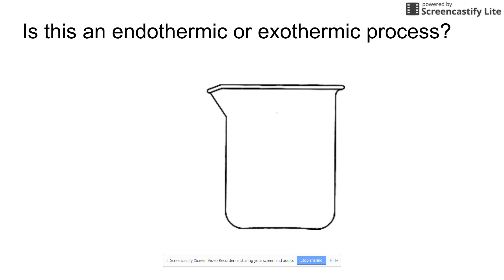So here's a drawing of a beaker, and when you mix the two chemicals, the chemicals are releasing energy. The chemicals are the system that's releasing energy to the surroundings, and so that's an exothermic process.